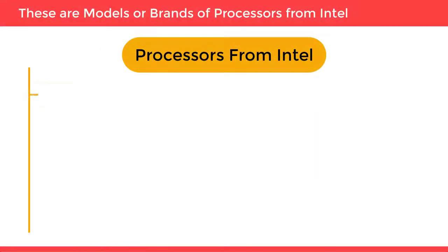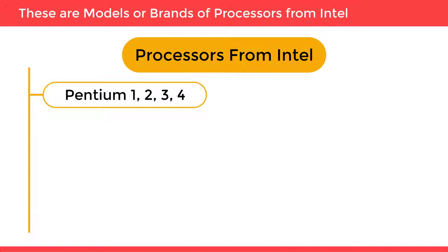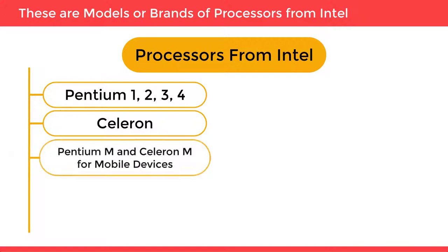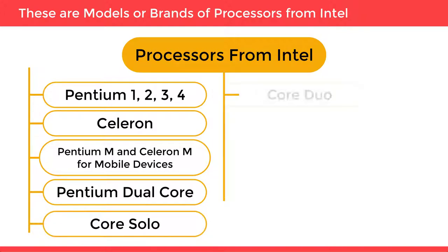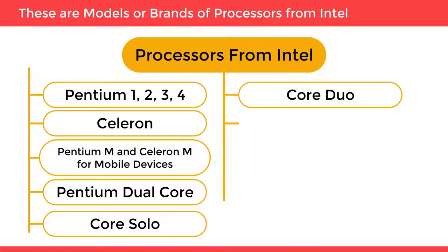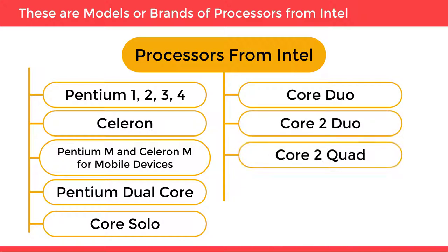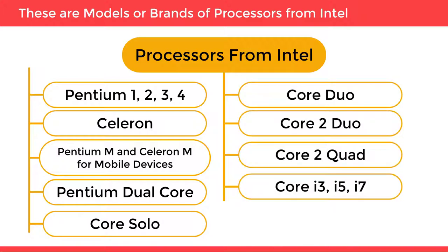These are models or brands of processors from Intel. It started with Pentium 1, Pentium 2, 3 and 4, Celeron, Pentium M and Celeron M for mobile devices, Pentium dual-core processors, then Core Solo, Core Duo, Core 2 Duo, Core 2 Quad, and now the generations are into Core i3, Core i5, and Core i7.